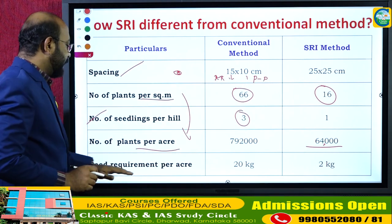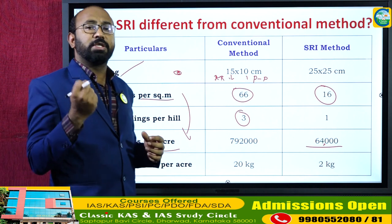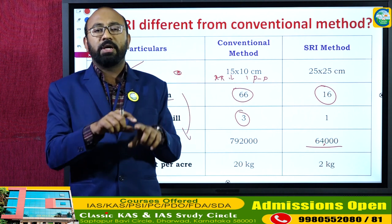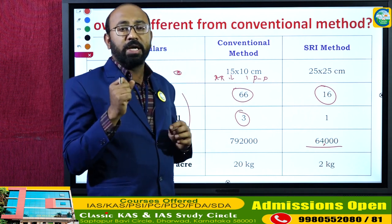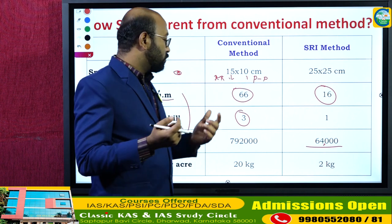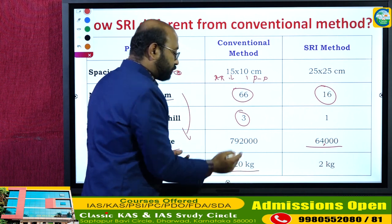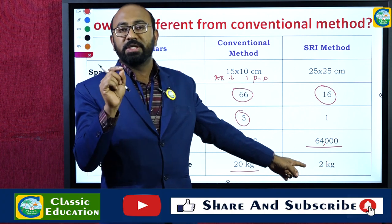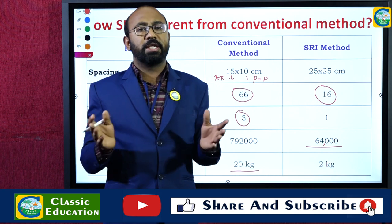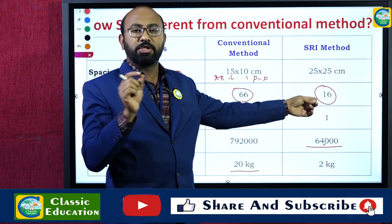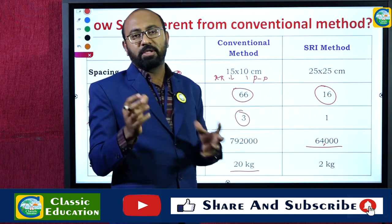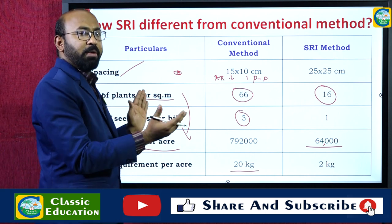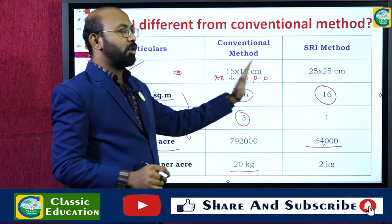Regarding seed requirement per acre: in the conventional method 20 kg of seeds are required for transplanting one acre. But in SRI, only 2 kg of rice seeds are required. The seed rate is very much less because number of plants are less and spacing is more — these are the very definable differences between conventional and SRI cultivation.